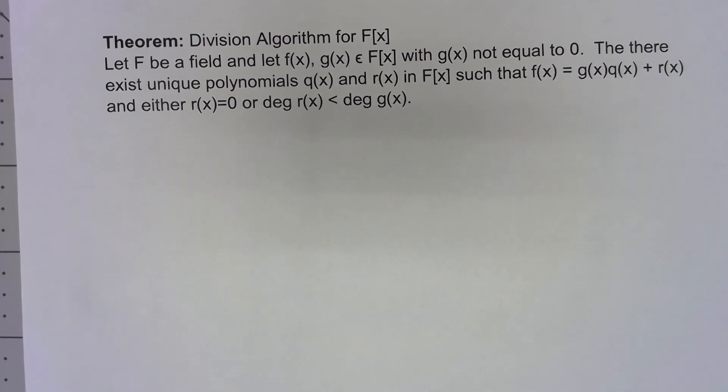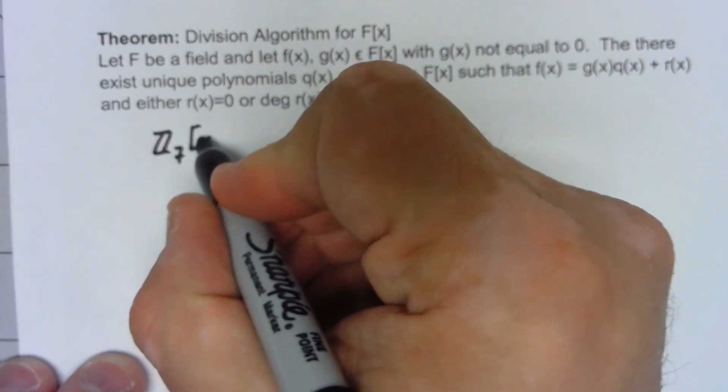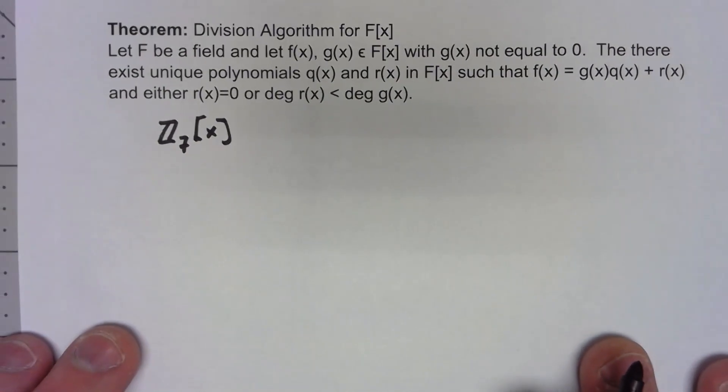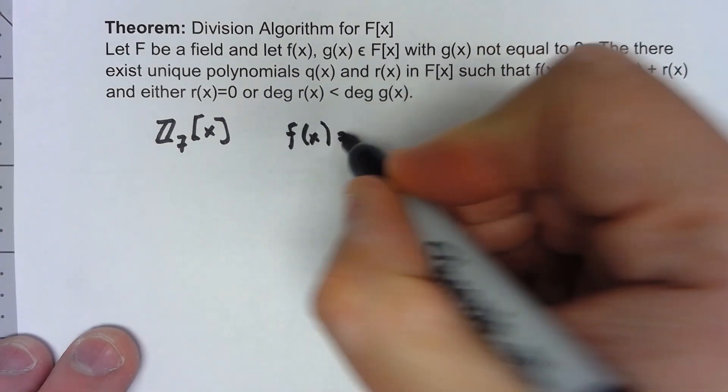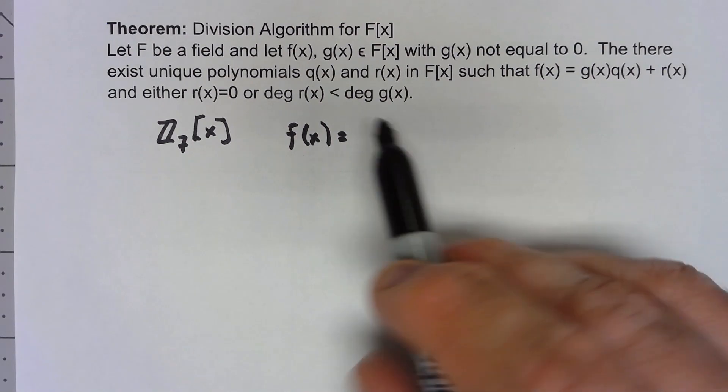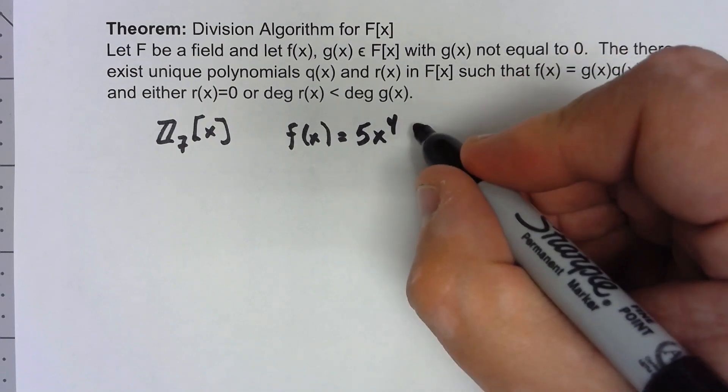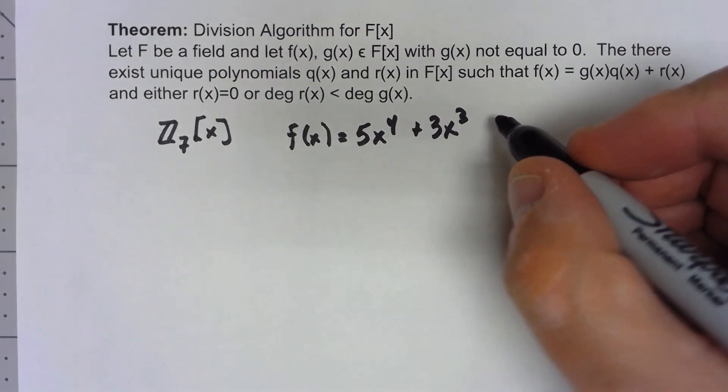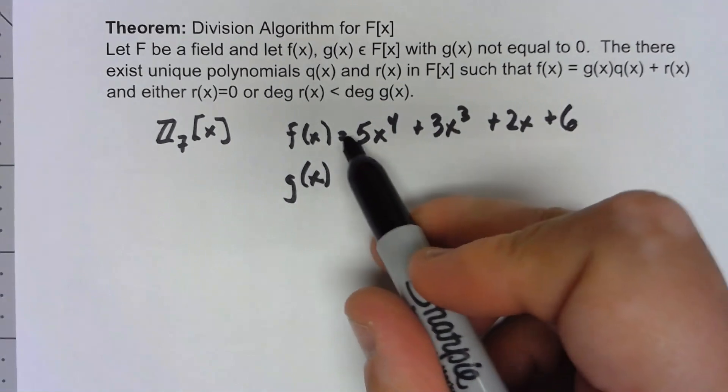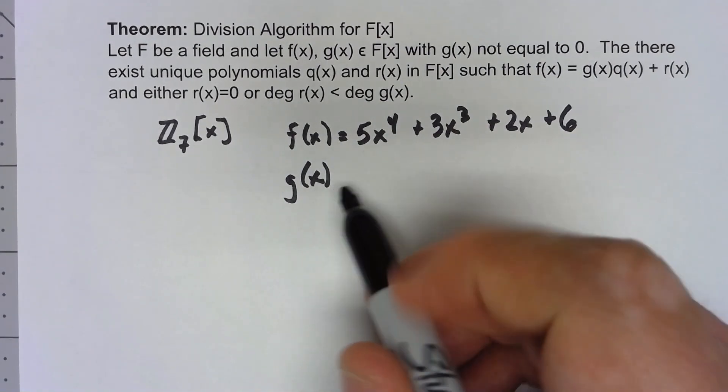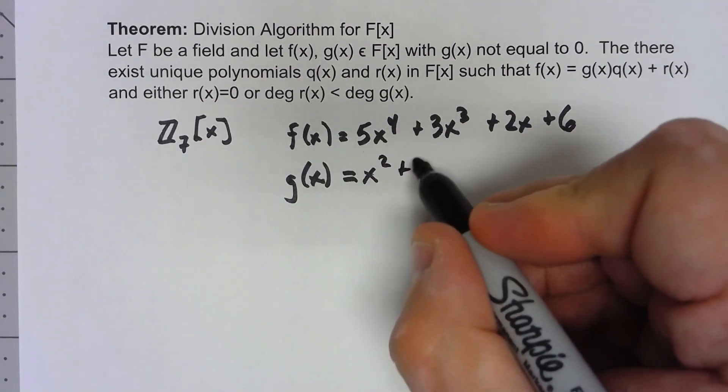So let's go ahead and say we're going to work in Z7[x]. Z7 is a field, and so what I want to do is I want to say that my f of x, all the coefficients in that polynomial have to come from Z7, so I'm going to say 5x to the fourth plus 3x cubed plus 2x plus 6, and the g of x, again f of x is basically the thing I'm dividing into, g of x I'll make x squared plus 3x plus 4.